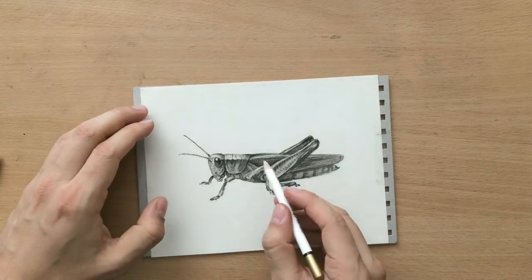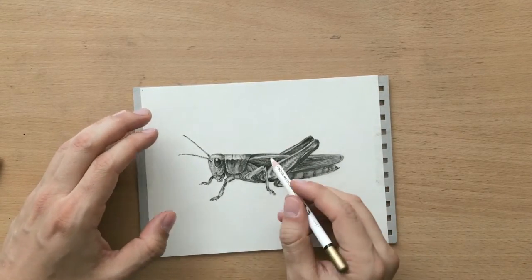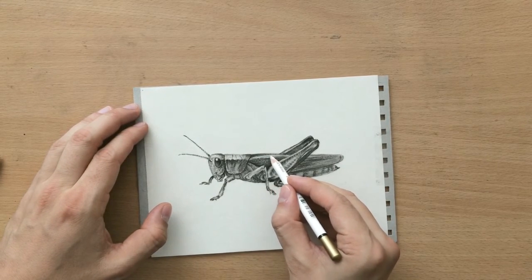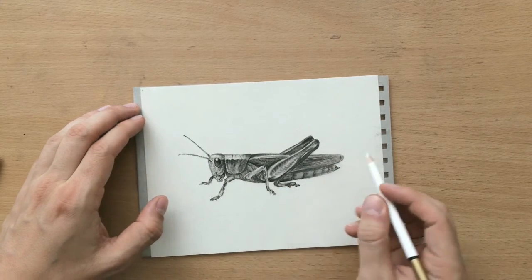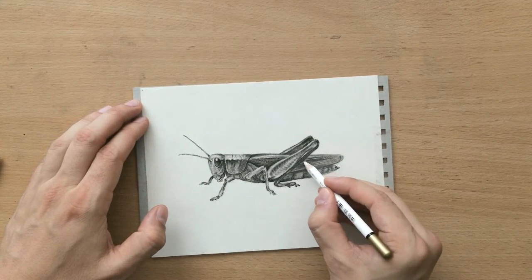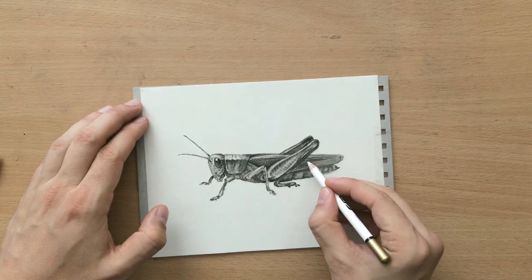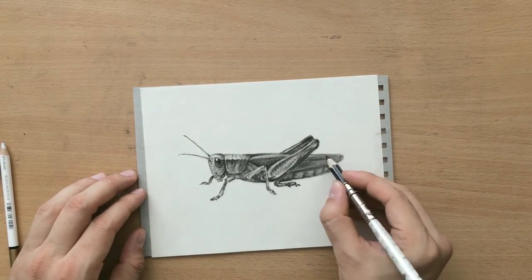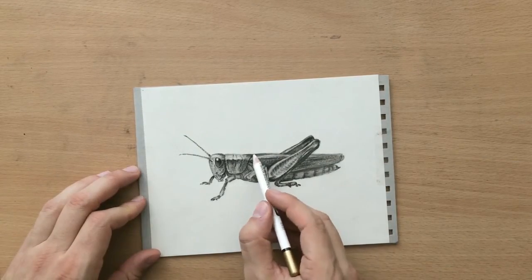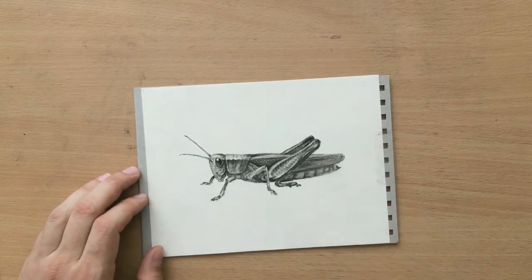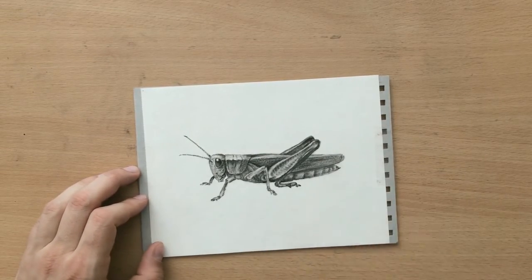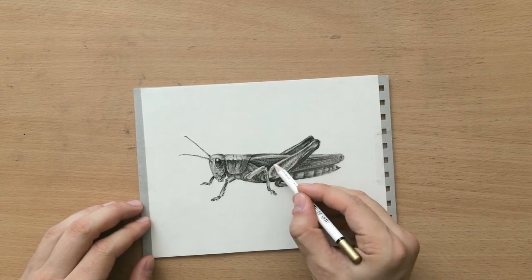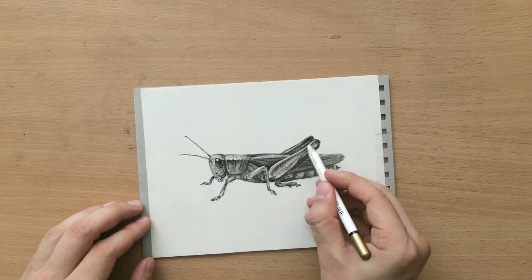I don't have to copy the pattern of those wings exactly. I just need to make a few suggestions here and there. I'm just erasing a few more highlights. I've got to clean up this edge a little bit.